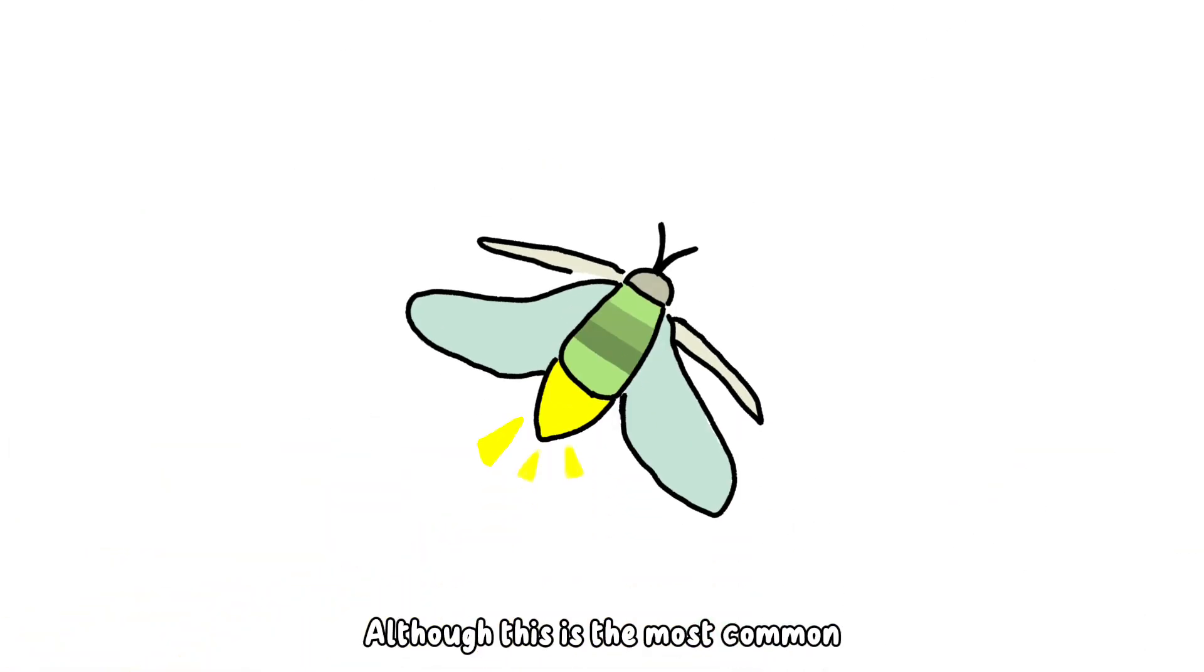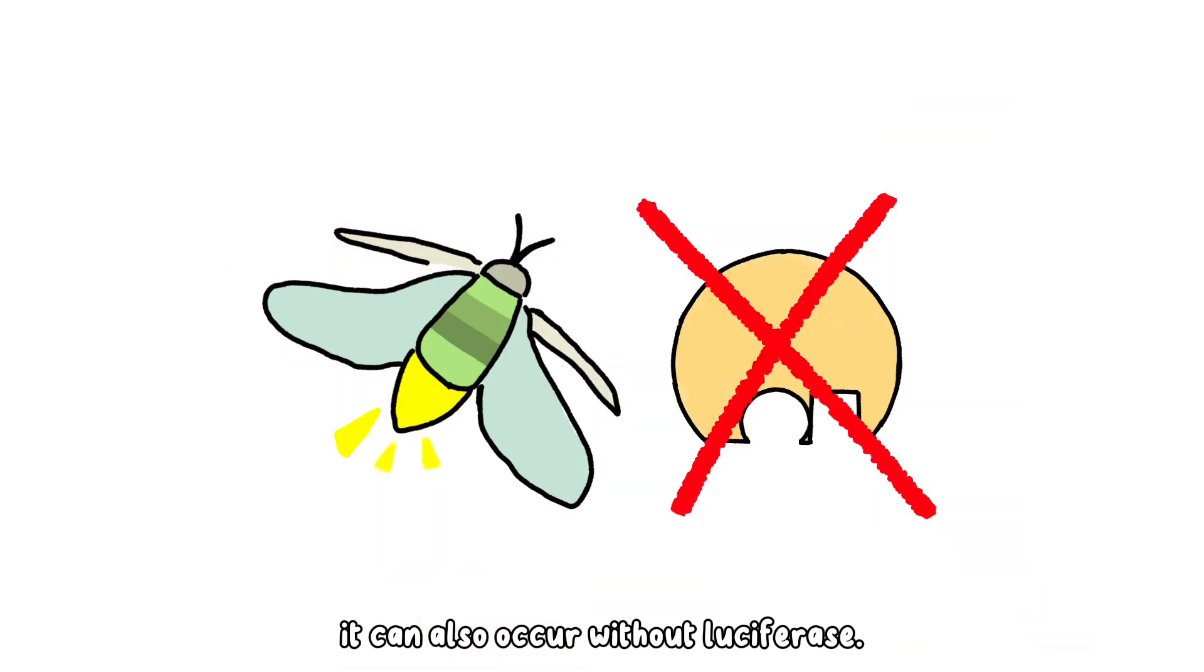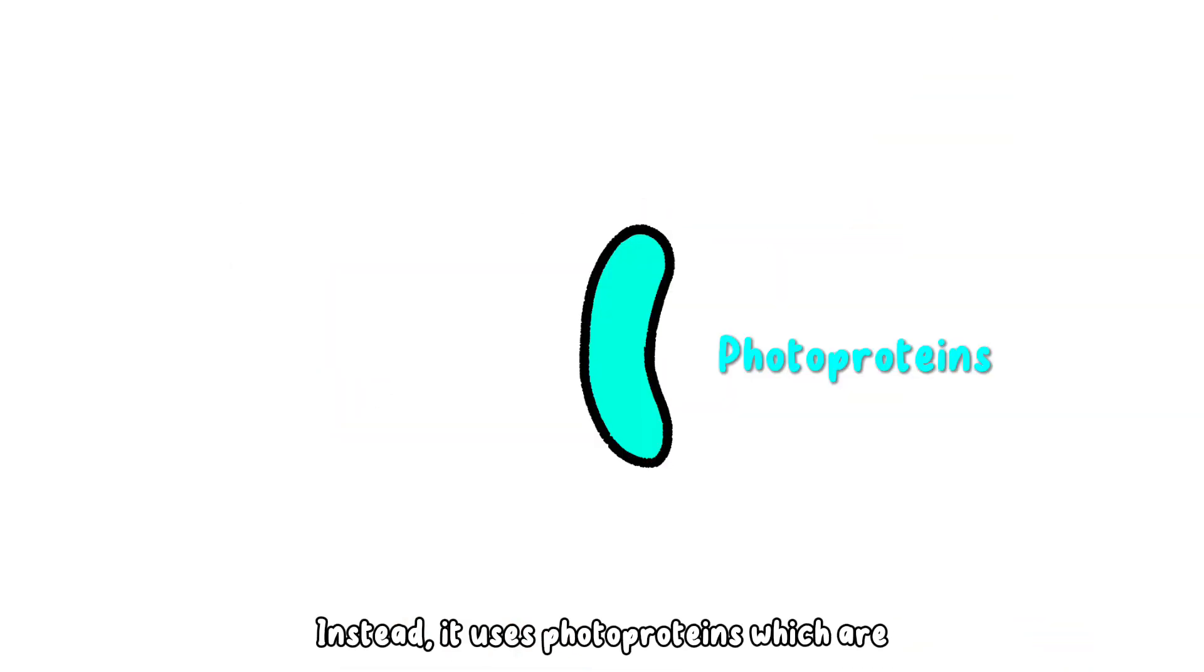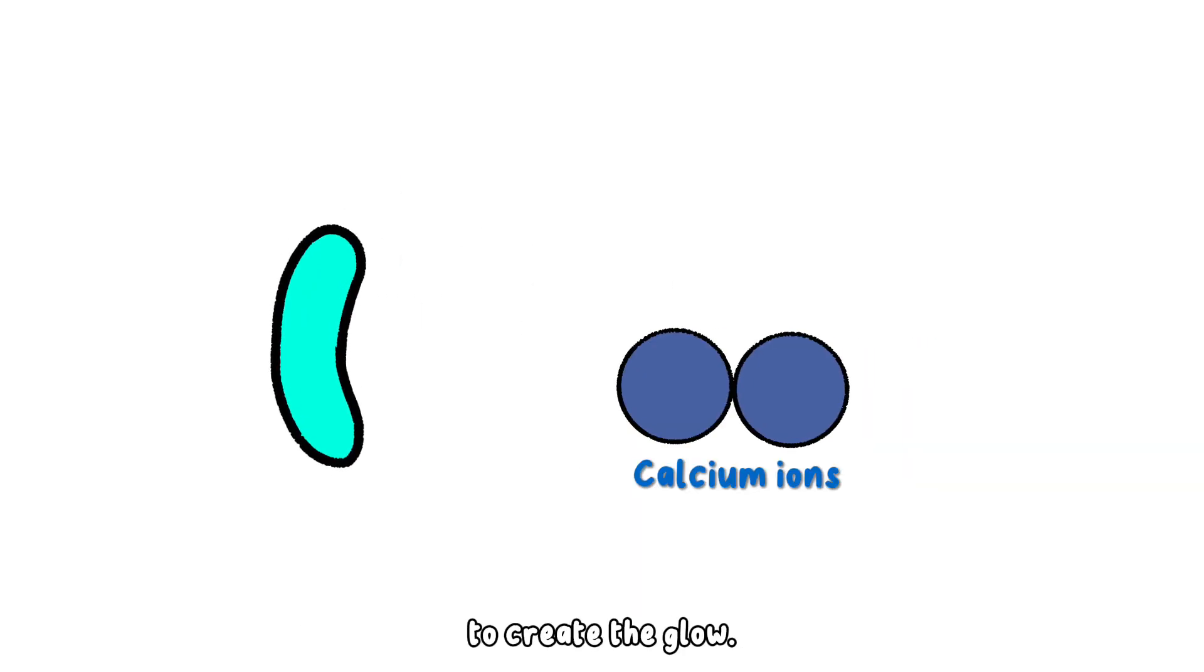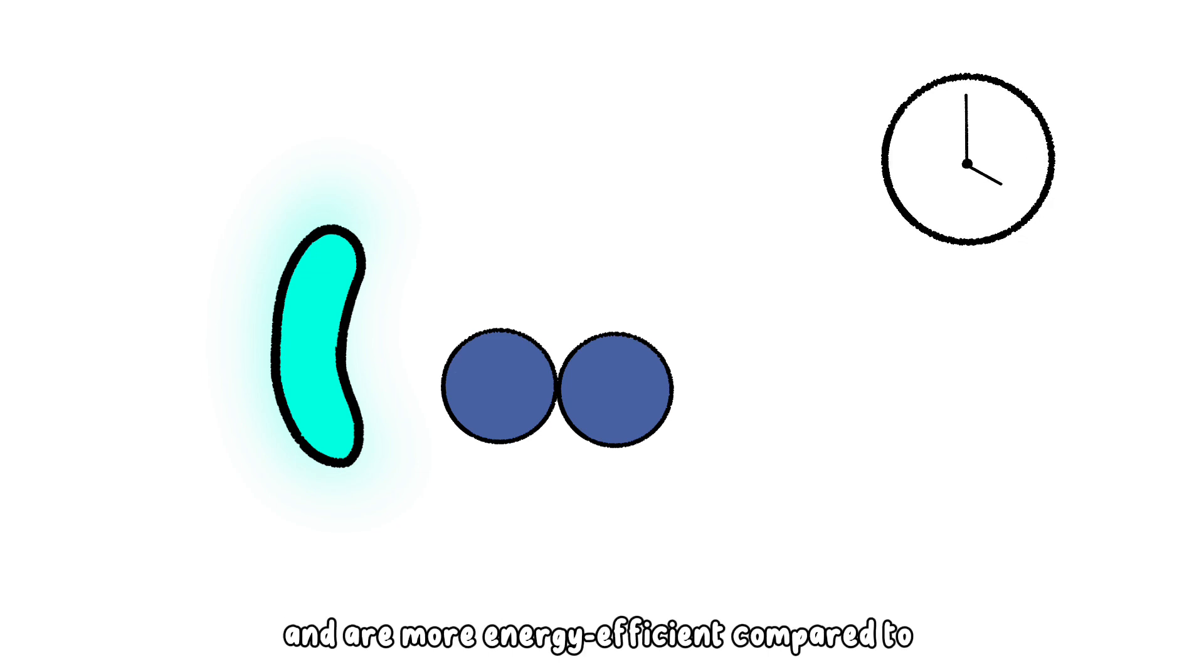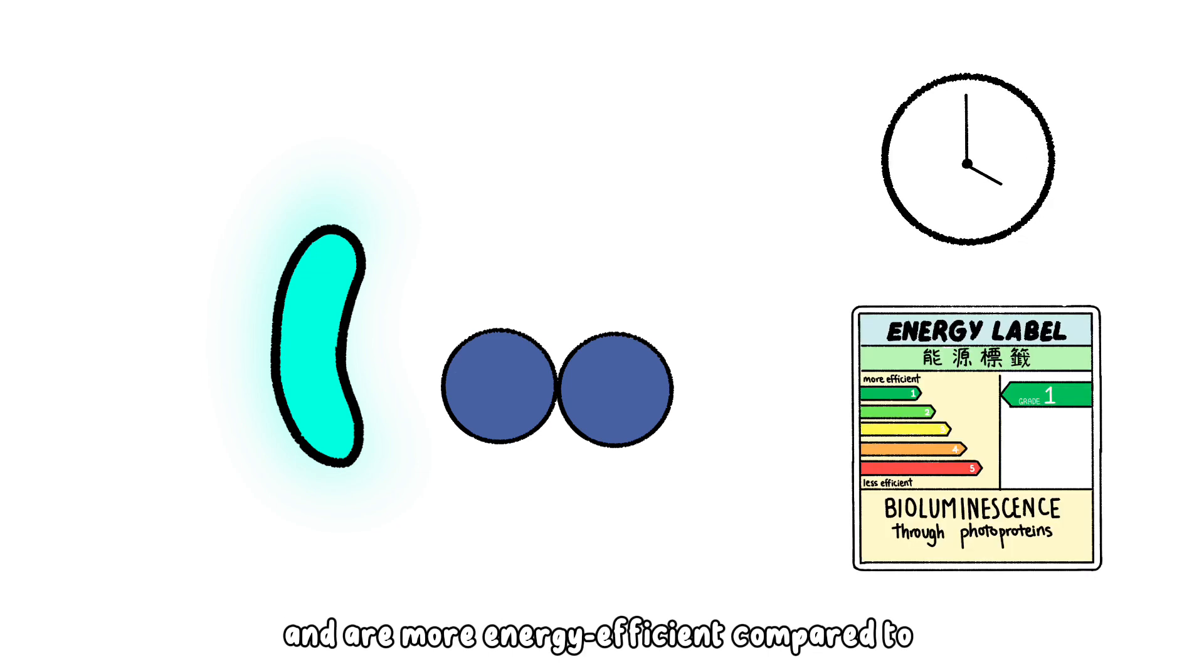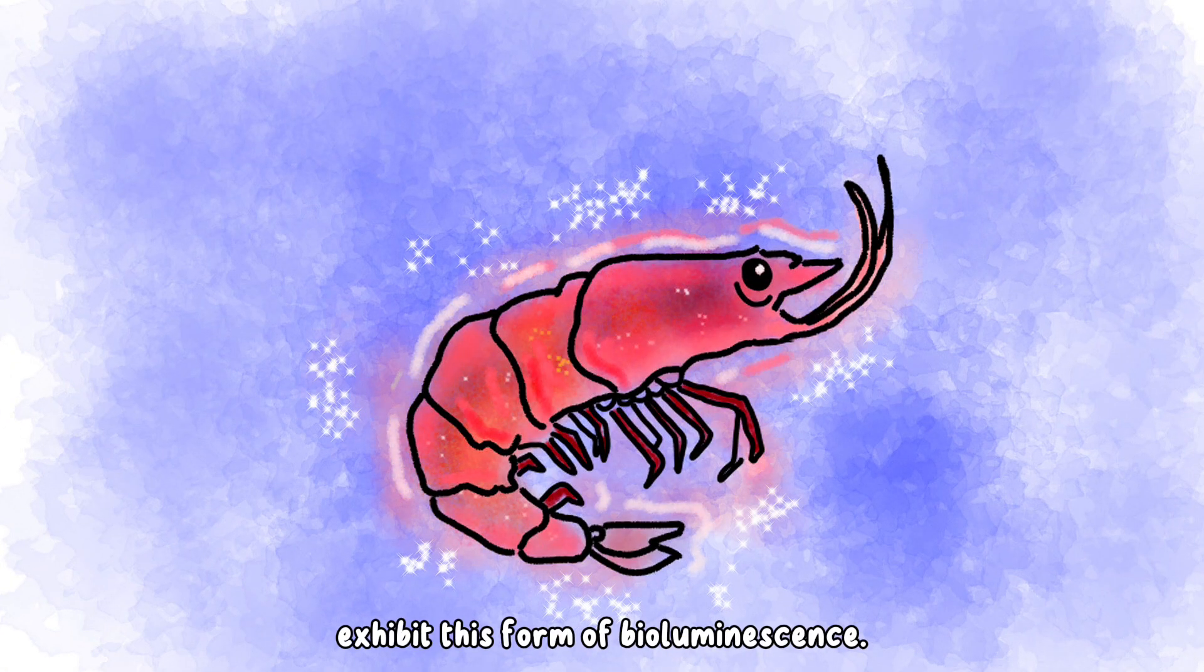Although this is the most common mechanism for bioluminescence, it can also occur without luciferase. Instead, it uses photoproteins, which are triggered by the presence of calcium ions to create the glow. This type of bioluminescence can glow for longer and are more energy efficient compared to the luciferin-luciferase system. Certain types of sea shrimps exhibit this form of bioluminescence.